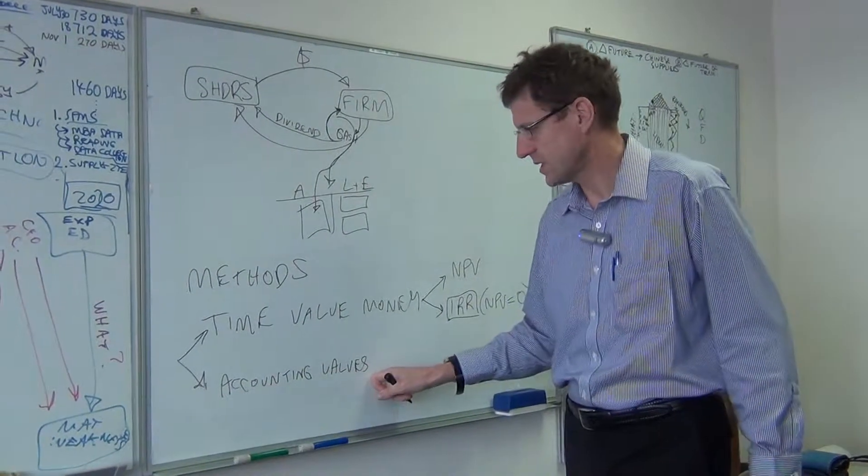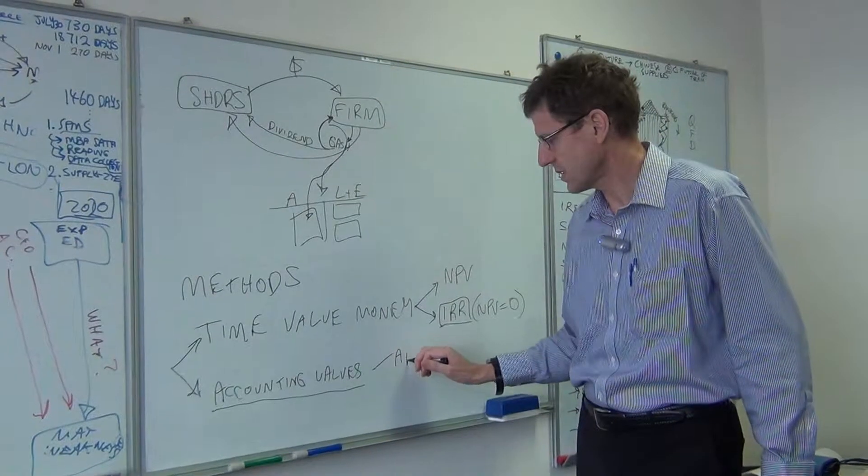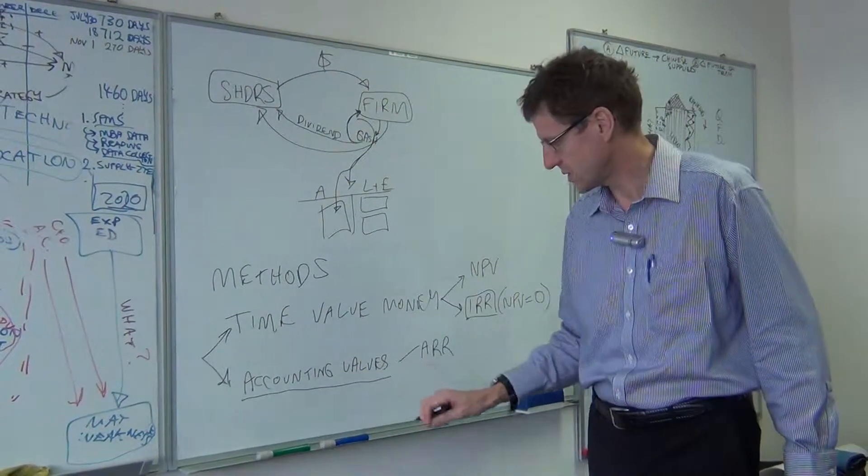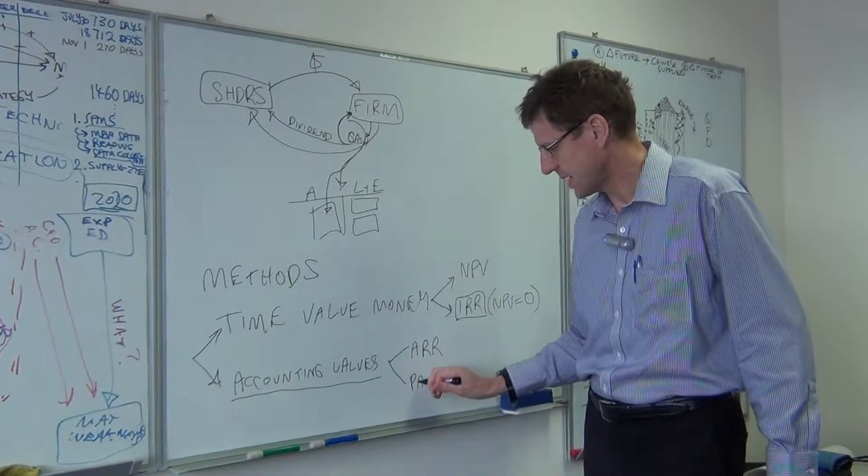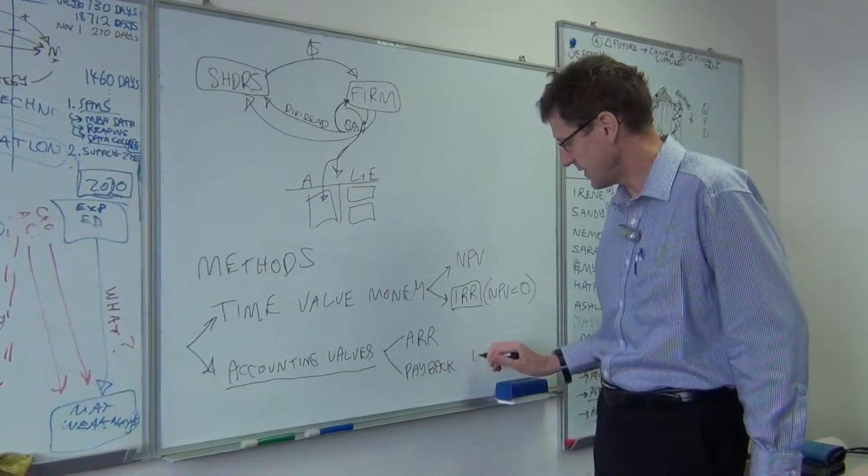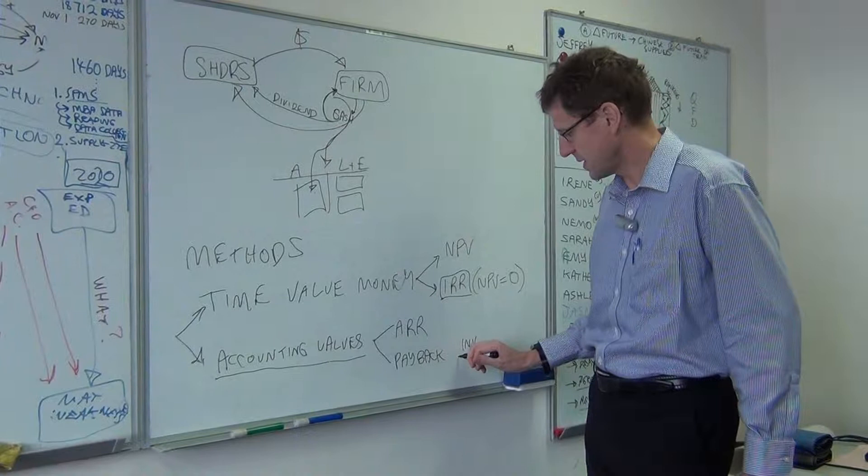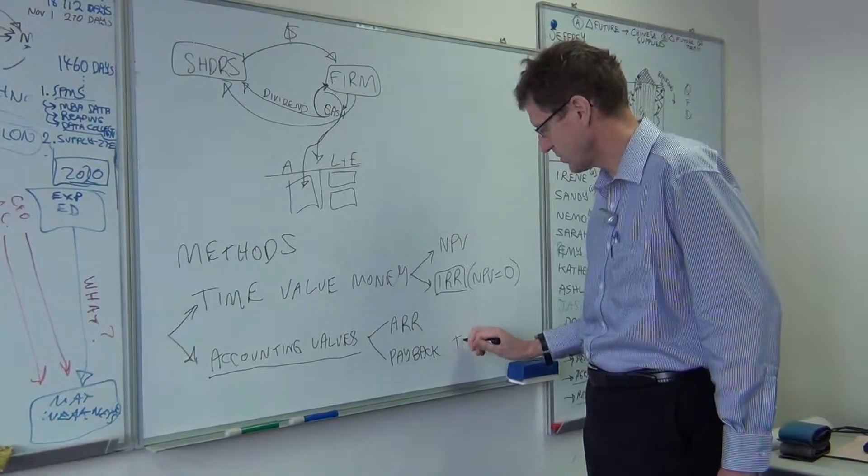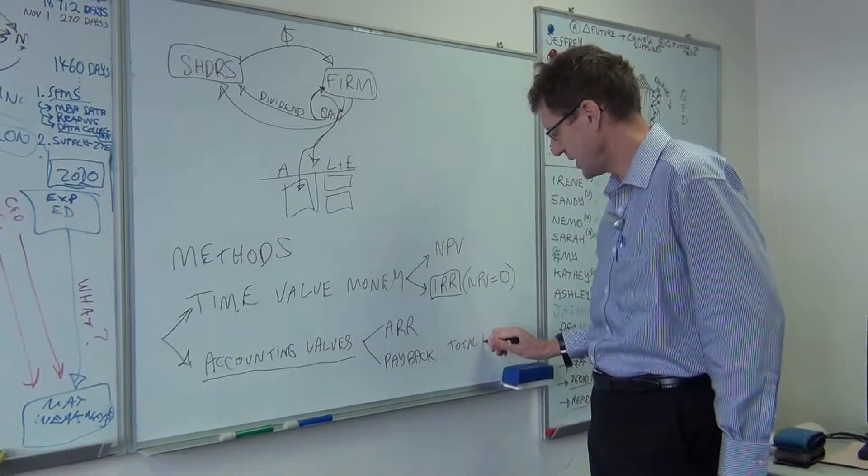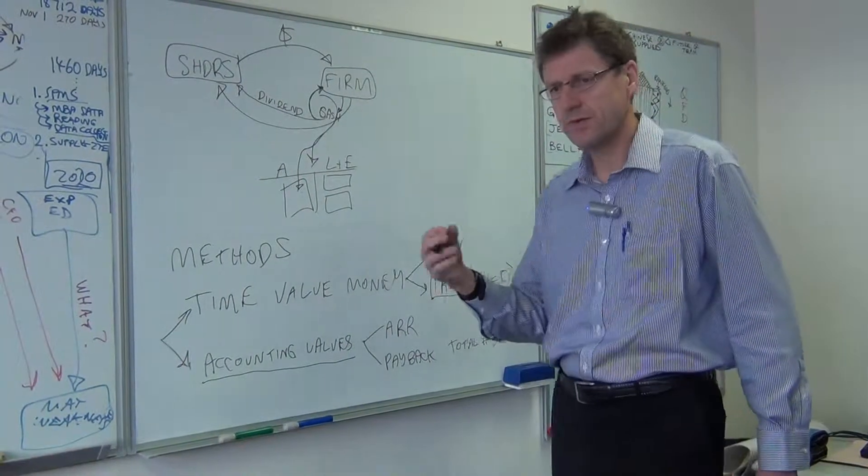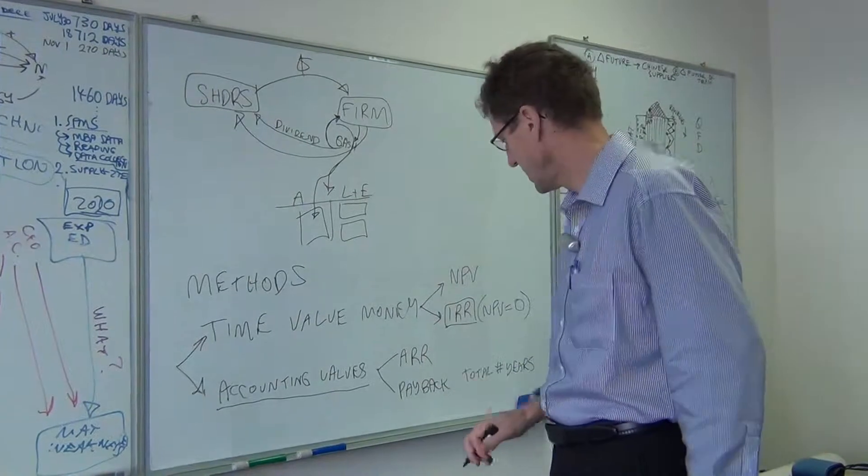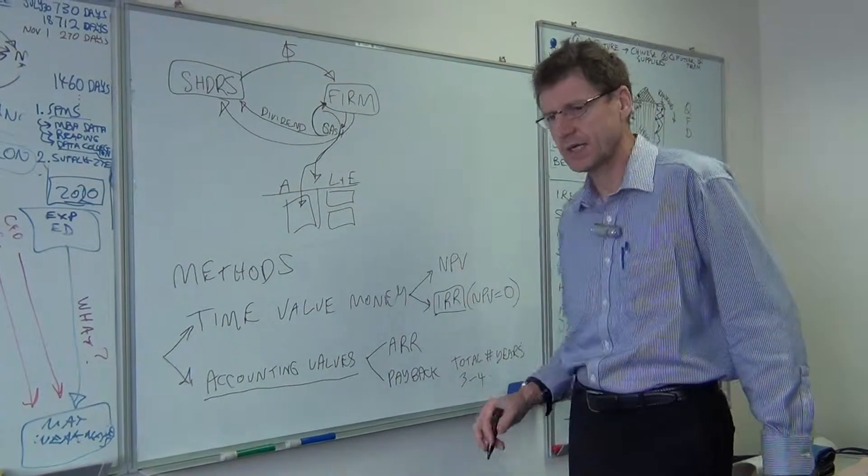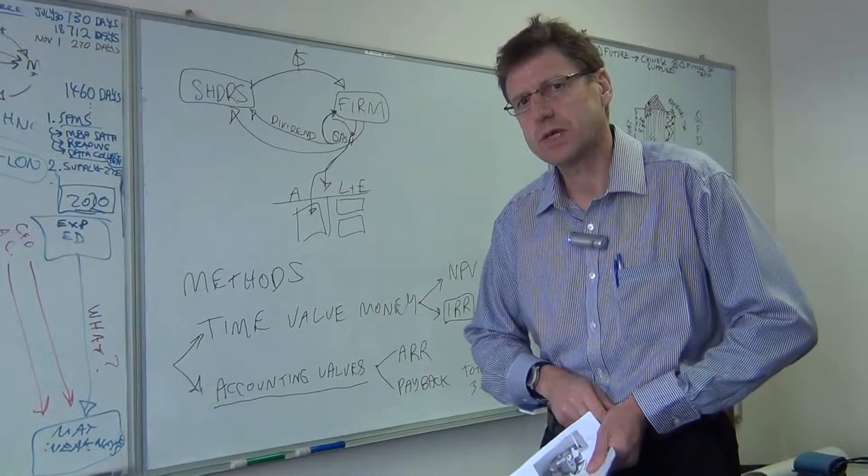The non-time value of money considerations are accounting values, that is, accounting rate of return, which just considers the accounting profits associated with the investment alternative. And another method is basically payback, which basically is the total number of years it takes for the future returns to add up to the initial investment. And so in many cases, a lot of companies are looking for three or four years of payback. Anything beyond that, they get concerned about the risks and the returns associated with the investment.